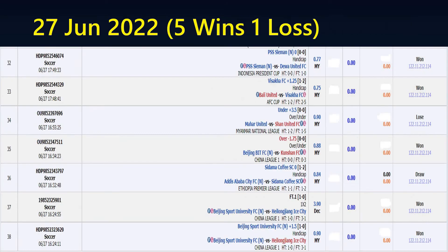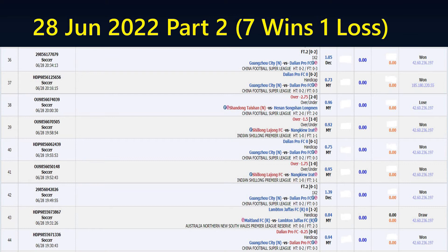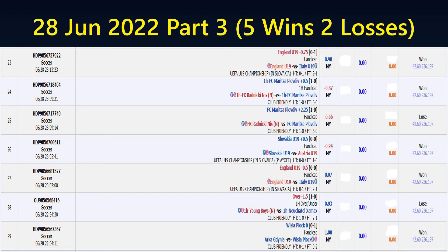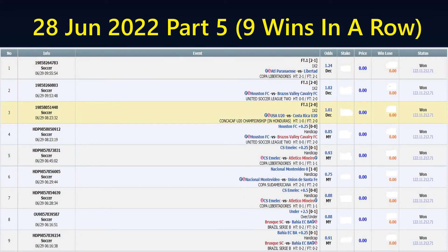Part 4: 6 wins, 2 losses. 27th June: 5 wins, 1 loss. 28th June Part 1: 7 wins, 2 losses. Part 2: 7 wins, 1 loss. Part 3: 5 wins, 2 losses. Part 4: 5 wins in a row. Part 5: 9 wins in a row.